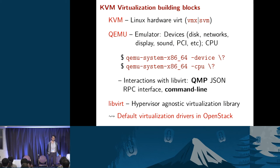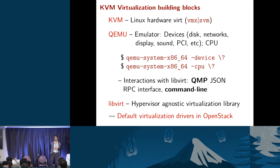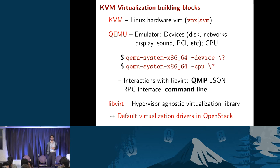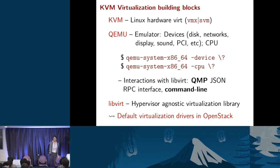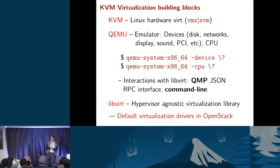If you do a `ps` on your compute host and grep for the QEMU process, you'll see a monstrous command line. LibVirt is the hypervisor-agnostic virtualization library that interacts with QEMU via two mechanisms: command line arguments and the QMP interface — the QEMU Machine Protocol. These are the default virt drivers in OpenStack Nova.